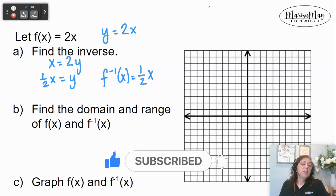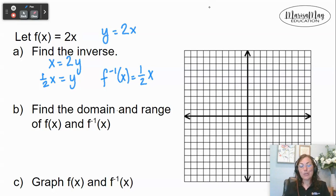Now, part B asked me for the domain and range for f of x and the inverse. Well, f of x is a line, right? y equals 2x. And so my domain and range is going to be all reals. My inverse here is also a line, y equals one half x. And so again, the domain and range for both of them are all reals.